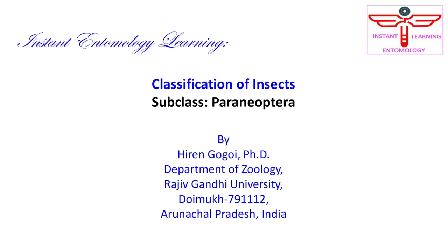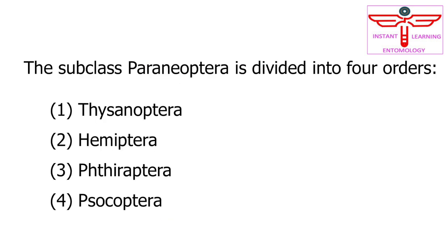Instant entomology learning: classification of insects, subclass Peroneoptera. The subclass Peroneoptera is divided into four orders: Thysinoptera, Hemiptera, Theroptera, and Socoptera.